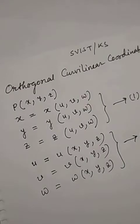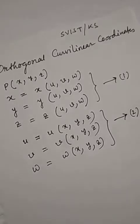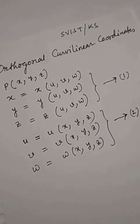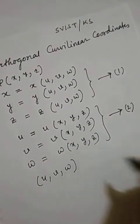Now, if the sets 1 or 2, whose functions are of single value and possess continuous partial derivatives, then these expressions are unique. If the expressions are unique, then the coordinates u, v, w are called the curvilinear coordinates.